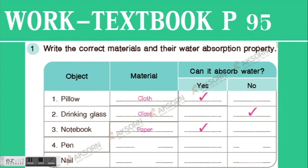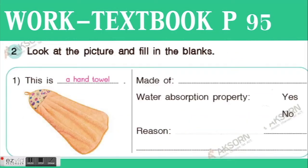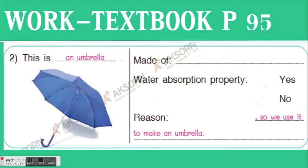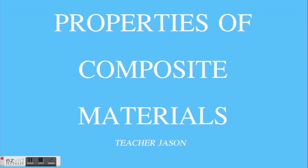What about a pen? Do you remember? A pen is made of plastic. Plastic does not absorb water. What about a nail? Somebody said iron, but it's metal. Metal does not absorb water. Also, we looked at a picture and filled in the blanks. A hand towel is made of cloth and absorbs water. An umbrella is made of plastic, and plastic does not absorb water.